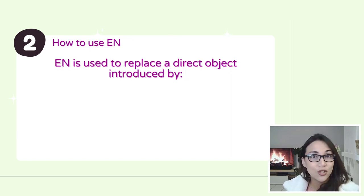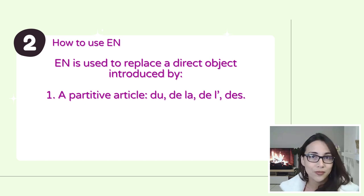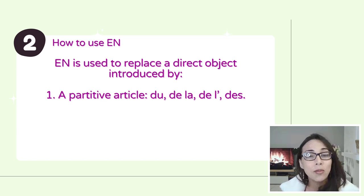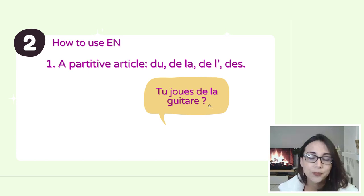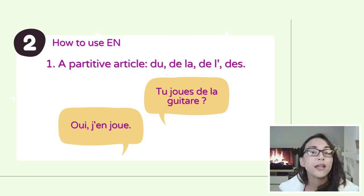EN is used to replace a direct object, or un COD — un complément d'objet direct — which is introduced by a partitive article: du, de la, de l', or des. For example, tu joues de la guitare? We have our partitive article right here — de la guitare. Oui, j'en joue. So instead of answering oui, je joue de la guitare, you can say oui, j'en joue. You can use EN because it's being introduced by DE LA.